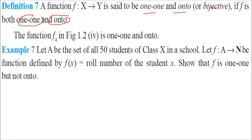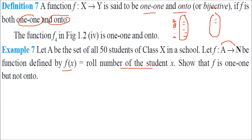Example: Let A be the set of all 50 students of Class X in a school. f is a function from A to N defined by f(x) = roll number of student x. Show that f is one-to-one but not onto. All students have a unique roll number, so f is one-to-one. However, roll numbers beyond 50 (like R51, R60) exist in N but no student corresponds to them — so f is not onto.